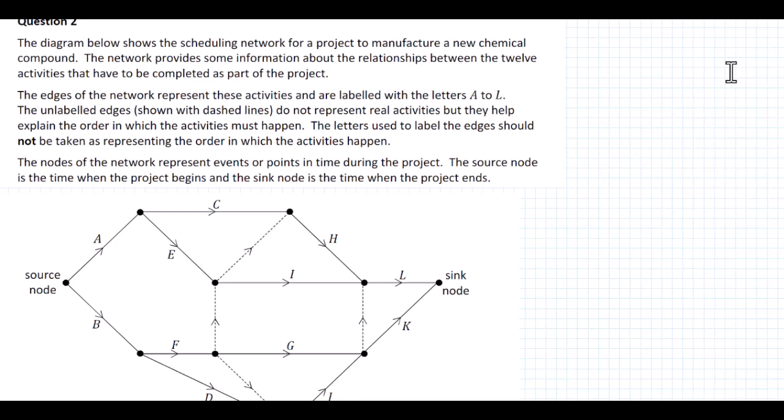The edges of the network represent these activities and are labelled with the letters A to L. The unlabelled edges shown with dashed lines do not represent real activities, but they help explain the order in which the activities must happen. The letters used to label the edges should not be taken as representing the order in which the activities happen. The nodes represent events or points in time during the project, and the source node is when the project begins and the sink node is when the project ends.